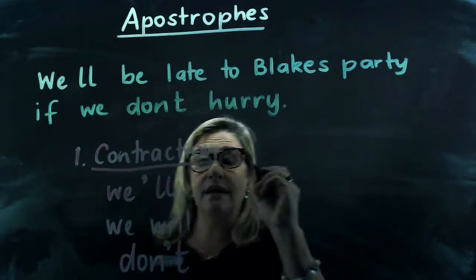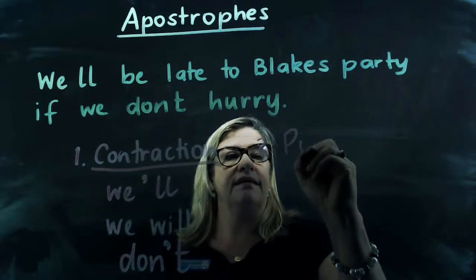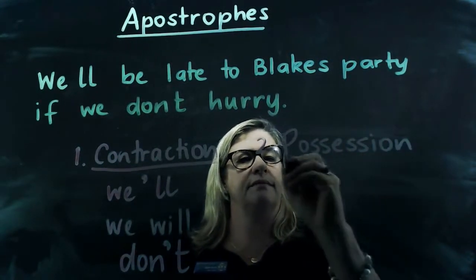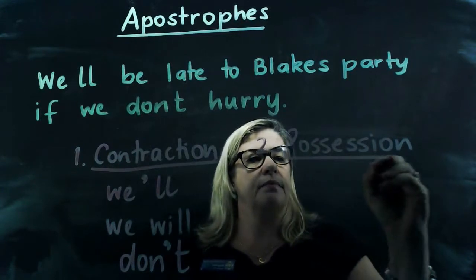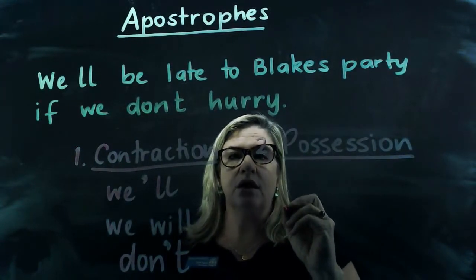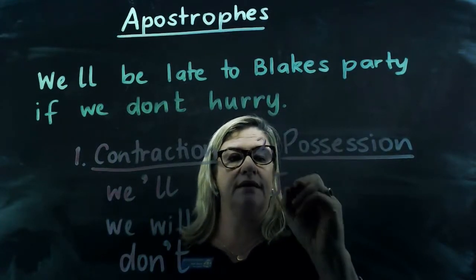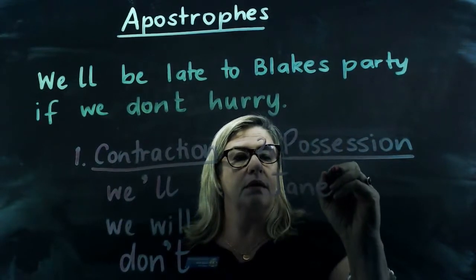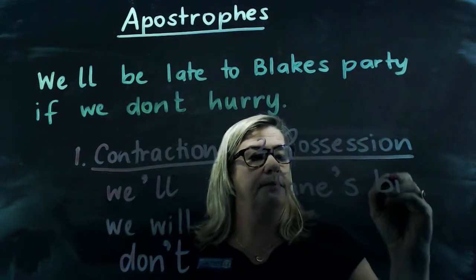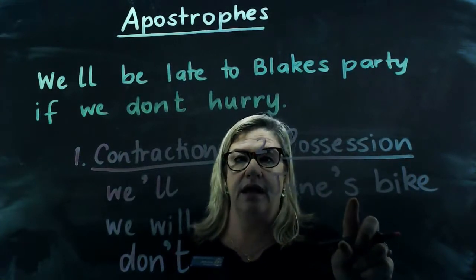The second time we use an apostrophe is to show possession — when something is owned by somebody. Possession with a singular noun, like 'Jane's bike': who owns the bike? Jane does, so we have an apostrophe S.